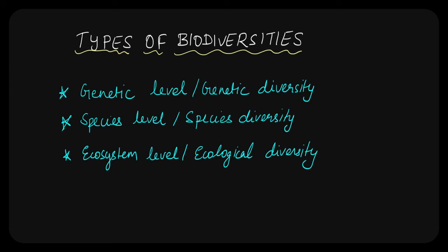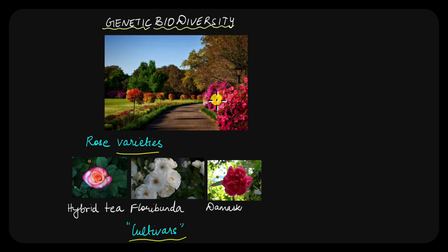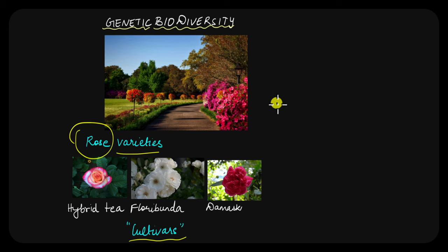We will start with the genetic level, or genetic biodiversity. Have you gone to a botanical garden where you have seen a lot of species of flowers? For example, a specific botanical garden might have different varieties of roses like hybrid tea rose, the floribunda rose, or even the damask. These varieties or cultivars are plants that belong to the same species of rose, but they look different phenotypically — different color petals, different size — because of the presence of genetic variations.